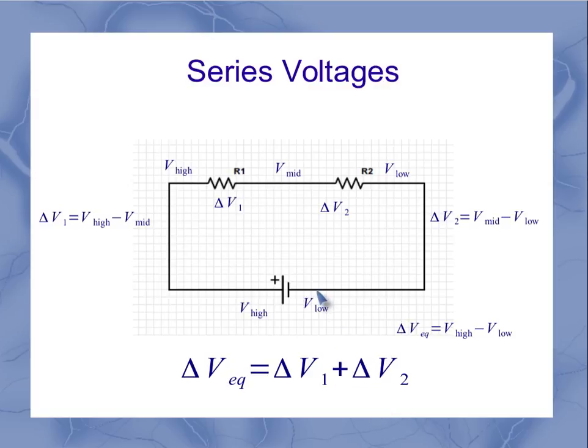You can think of it this way: the battery increases the potential, and the combination of the two resistors decreases it a little bit and then a little bit more, but it has to add up to the total amount that my battery originally increased it.